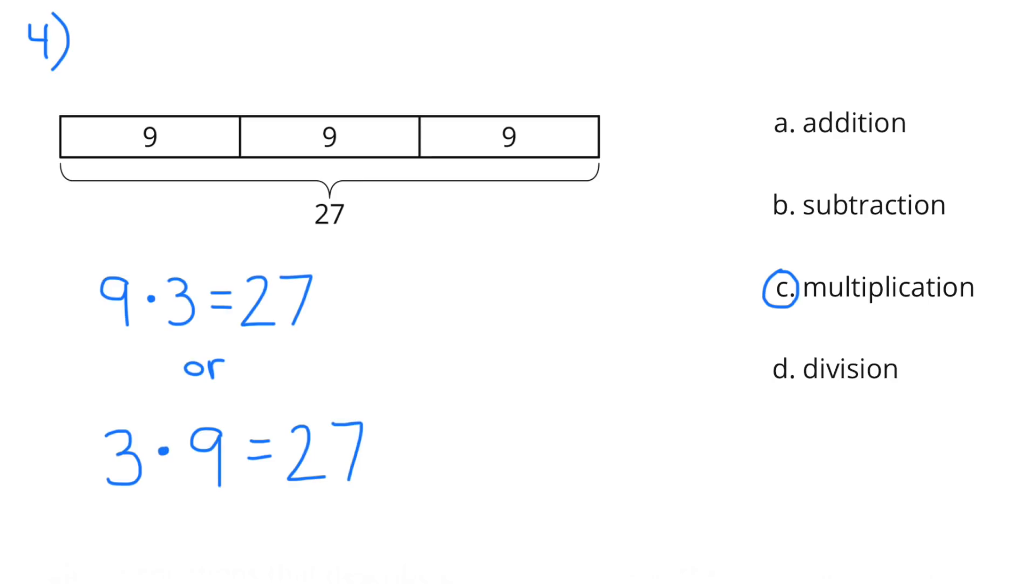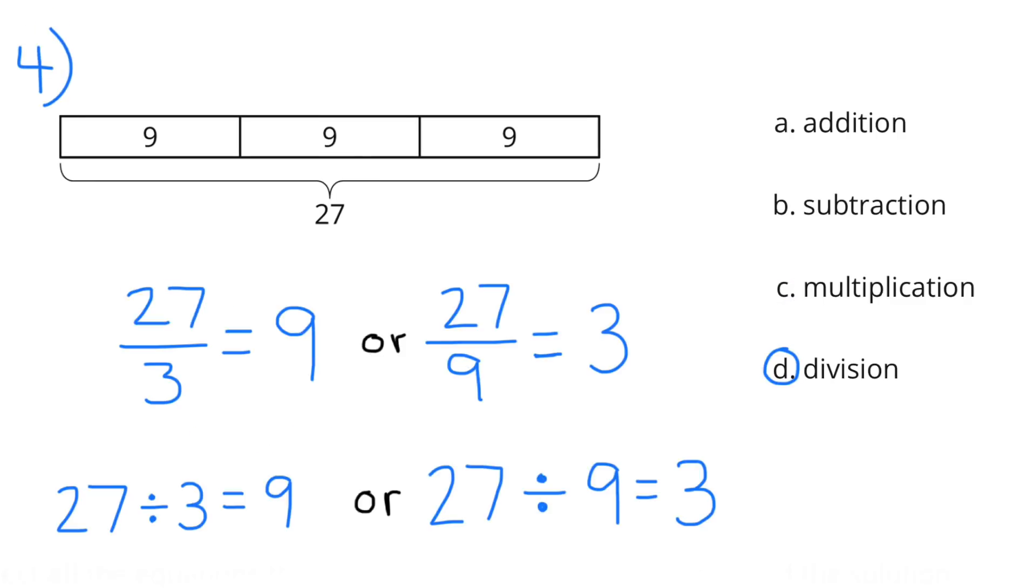C. Multiplication. 9 times 3 equals 27 or 3 times 9 equals 27. D. Division. 27 thirds equals 9 or 27 ninths equals 3 or 27 divided by 3 equals 9 or 27 divided by 9 equals 3.